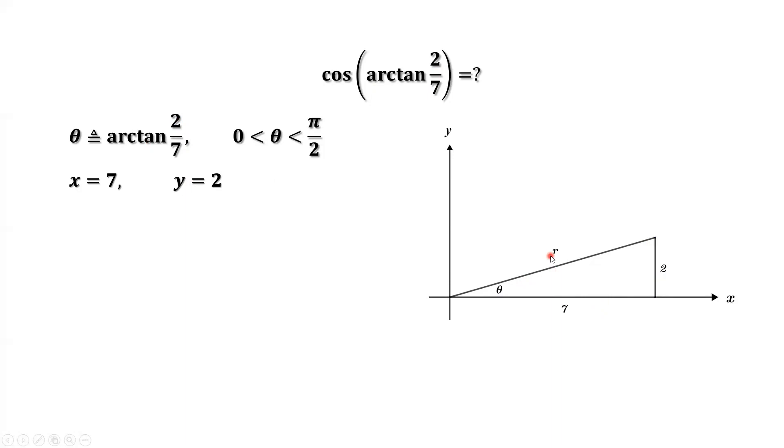We can find little r, the hypotenuse. Hypotenuse equals x squared plus y squared. Then take the square root. Equals square root of 7 squared plus 2 squared. Equals square root of 53.